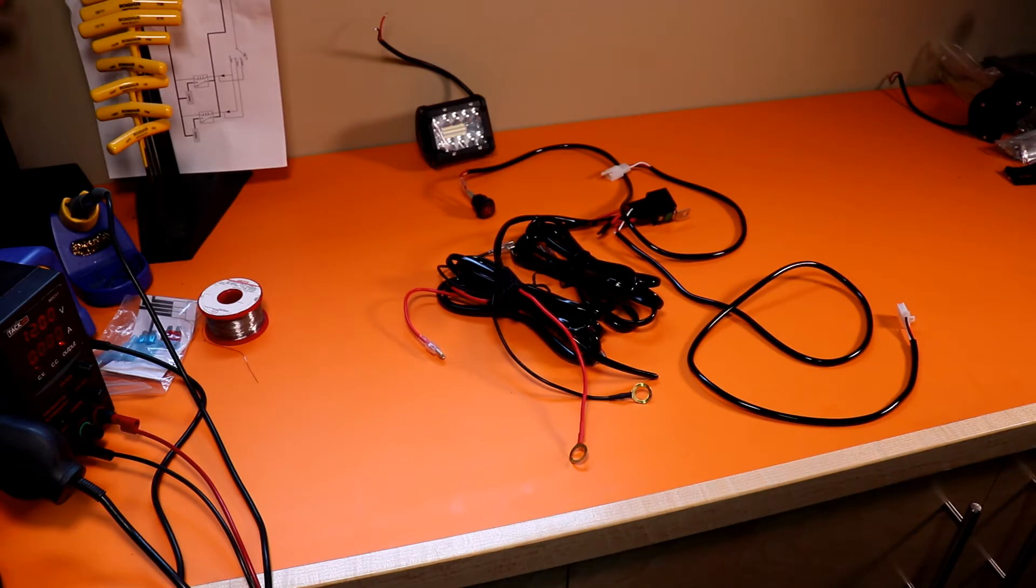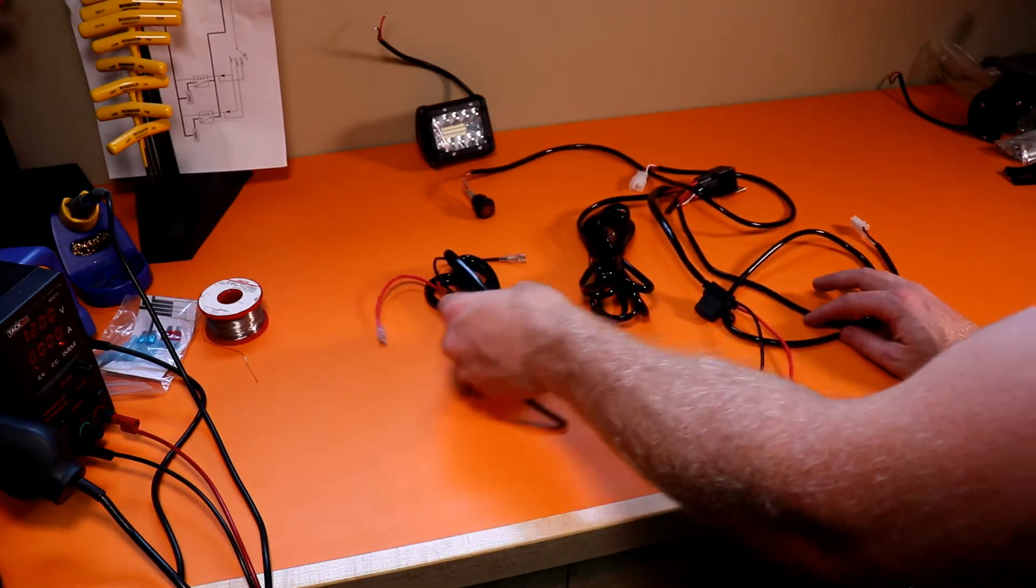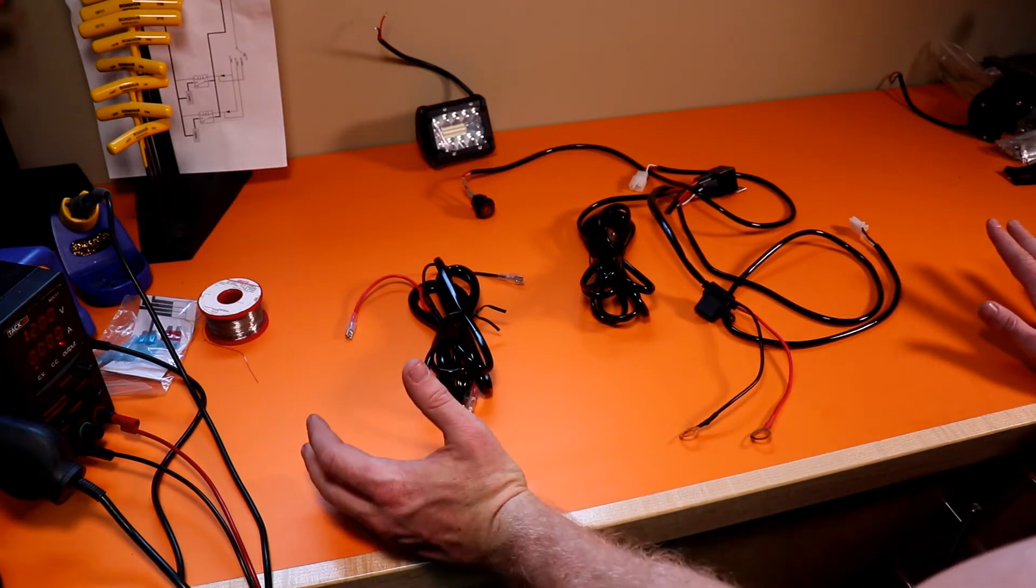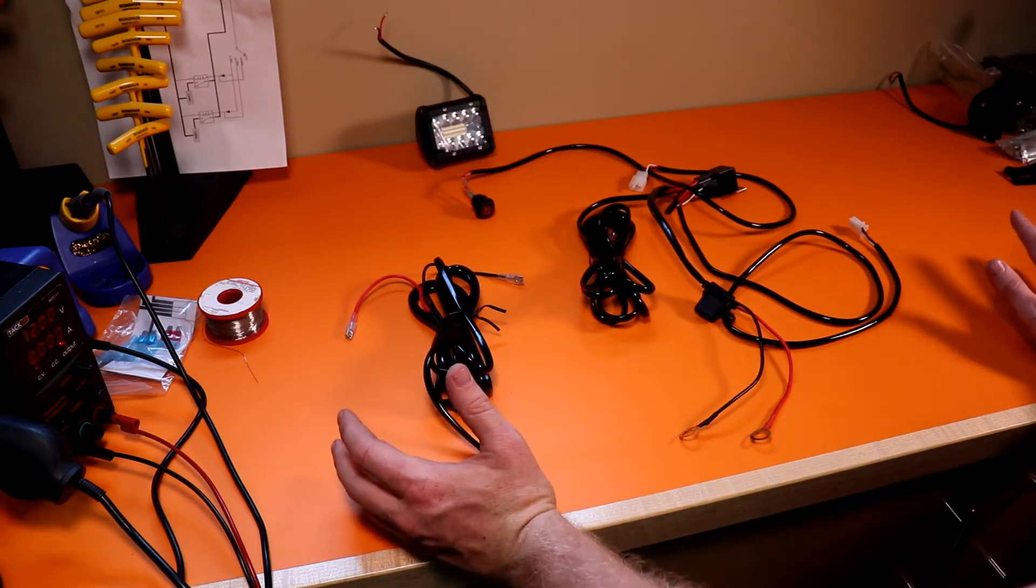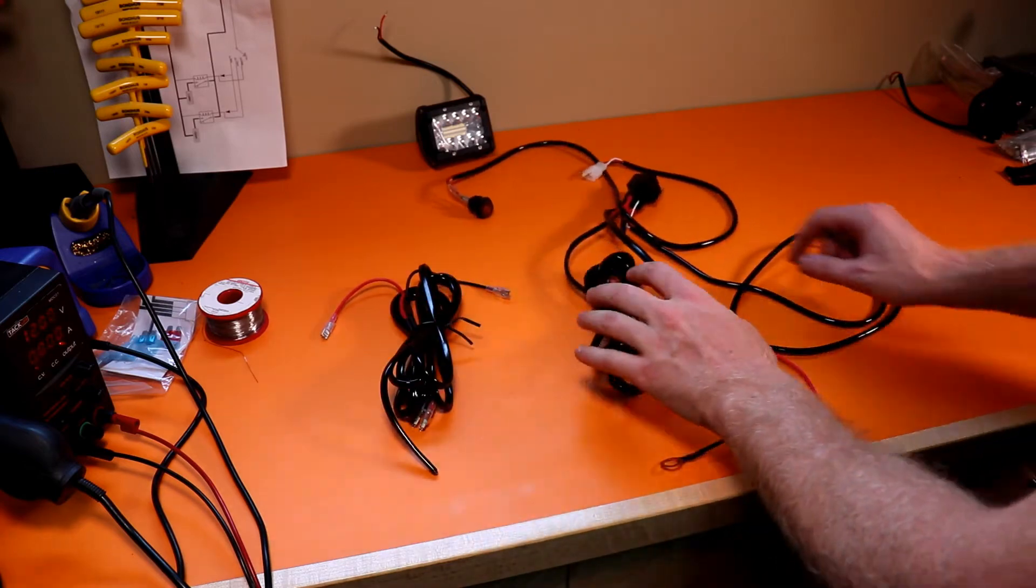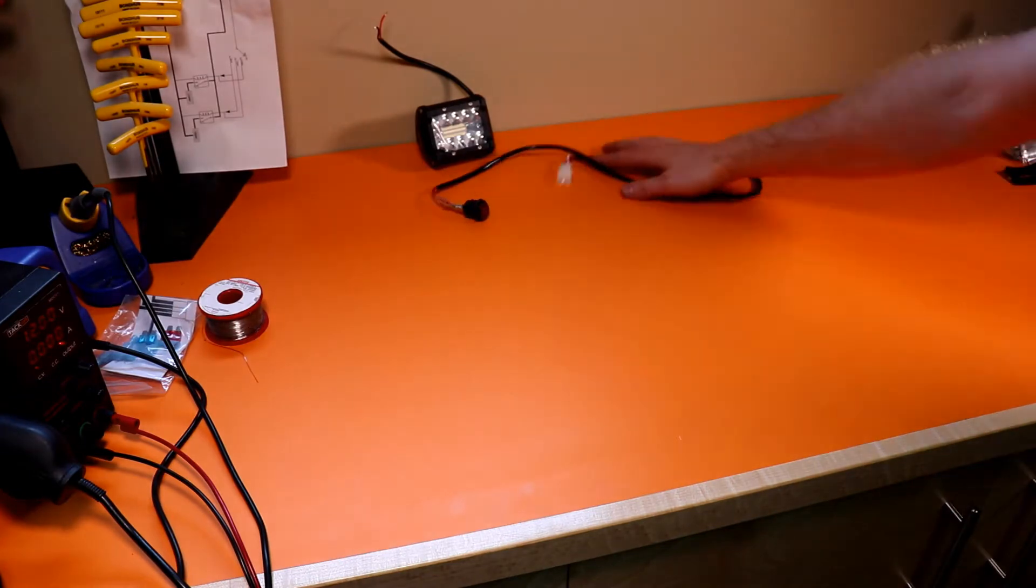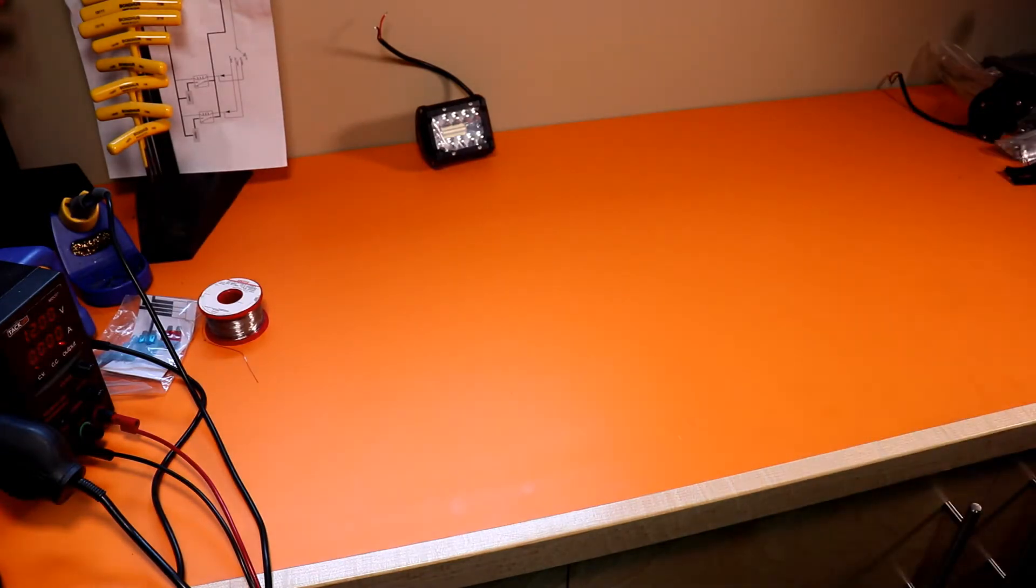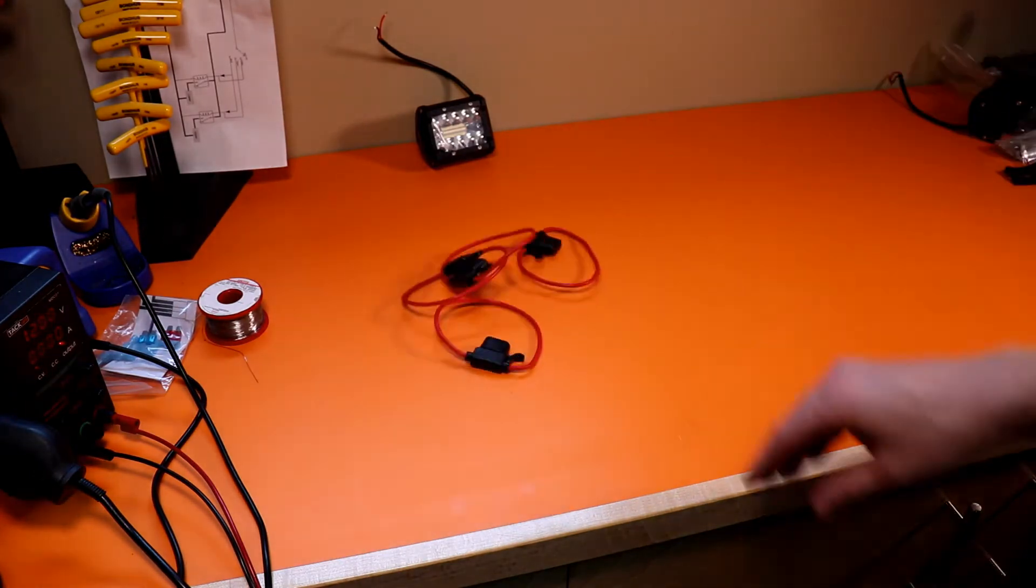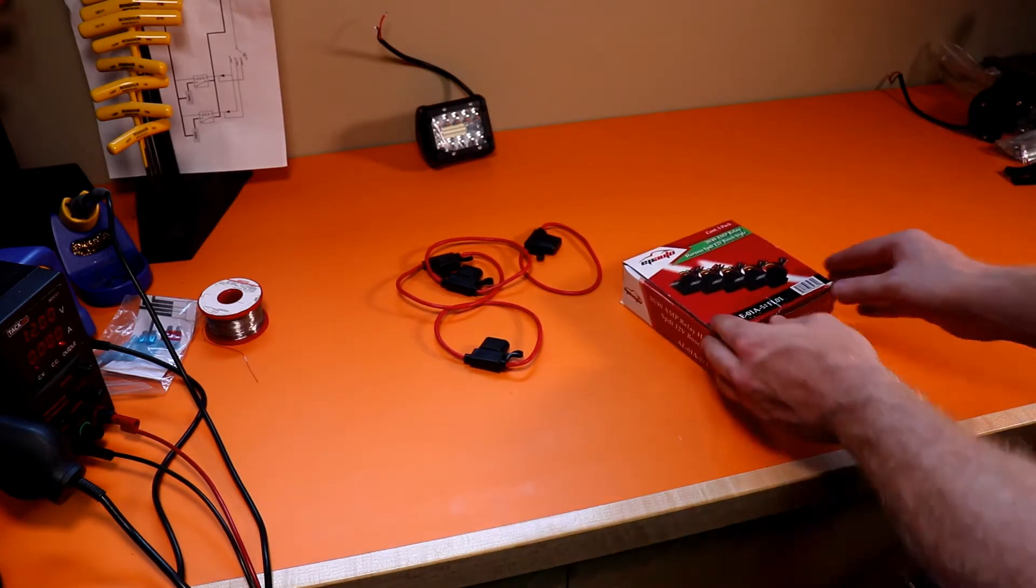Alright, I know I initially said that we would use this wiring harness, but the more I look into it, the more I figured we're just going to go full custom. That way we don't have extra lengths of wire hanging out, and I just don't need all this stuff. So we need some fuses, so I got some fuse holders. We need some relays, so I got a box of those.